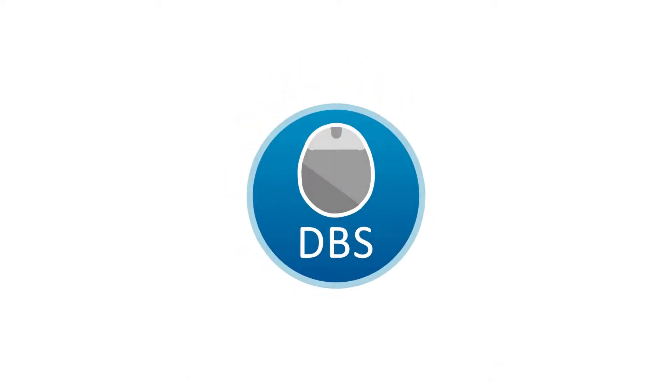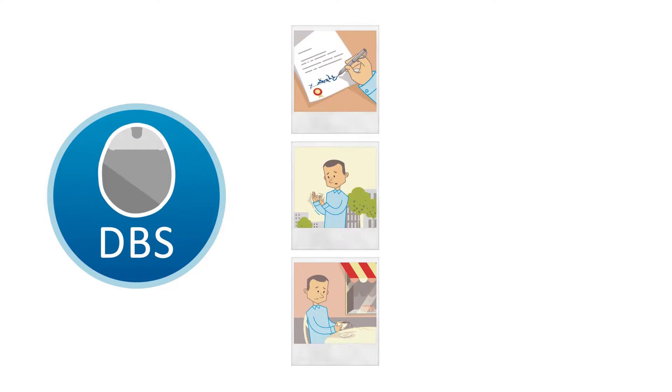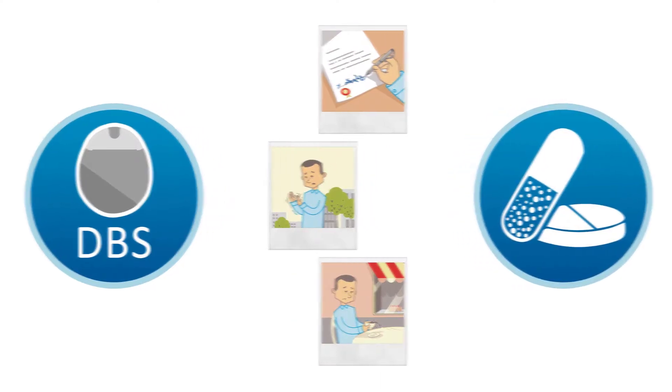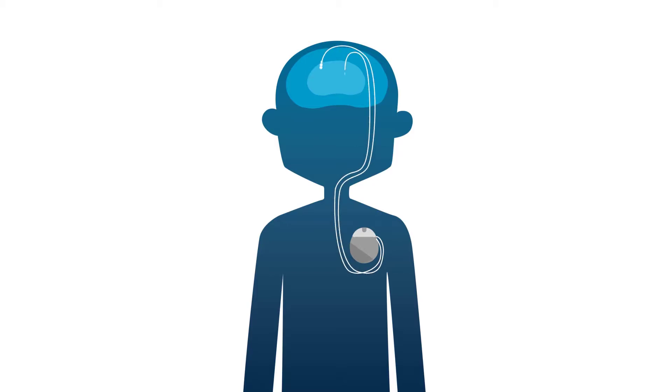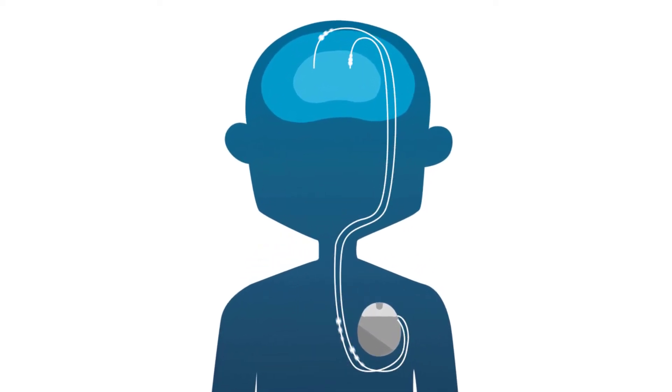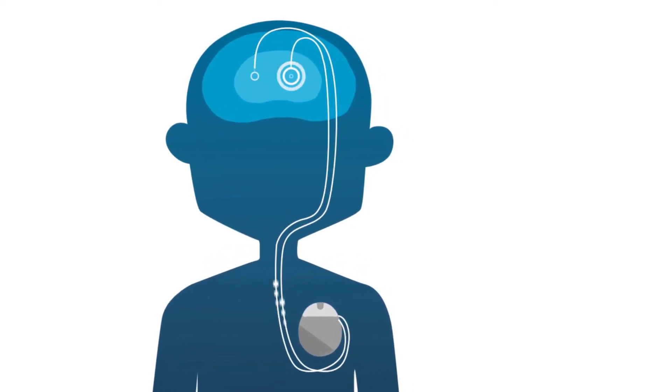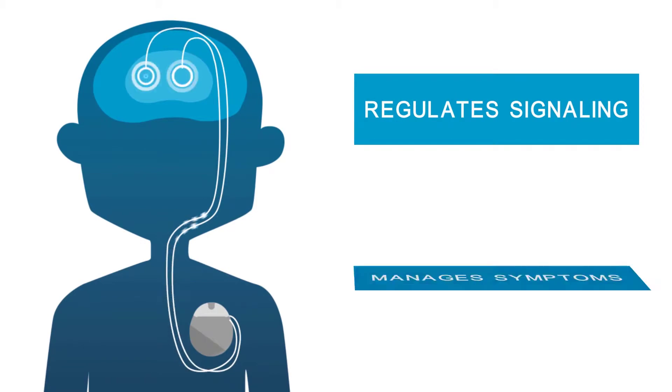Deep Brain Stimulation can help to manage Parkinson's symptoms which can't be effectively controlled by medication alone. It works by surgically implanting a modest medical device, typically under the skin in the chest, which sends signals to the brain via one or two insulated wires called leads. Mild electrical impulses stimulate a specific region of the brain, which may help regulate signaling and manage symptoms.